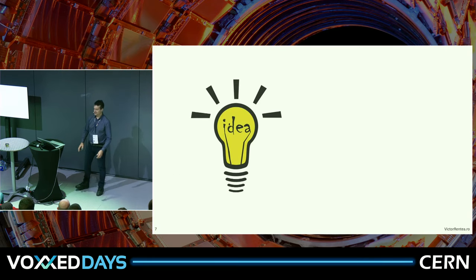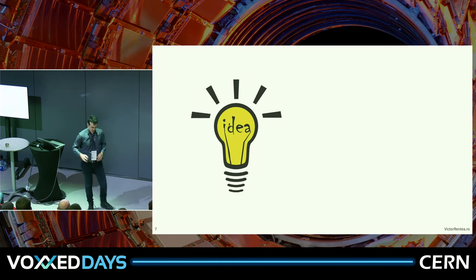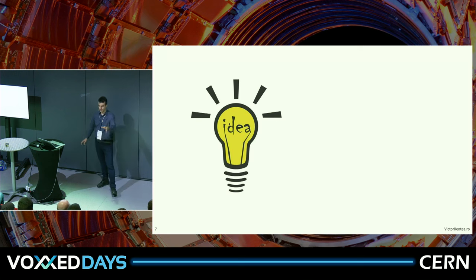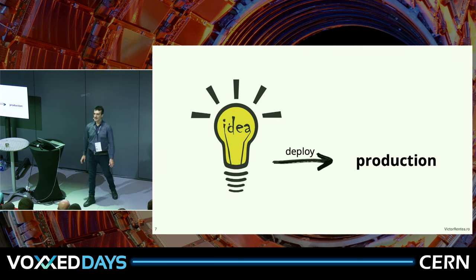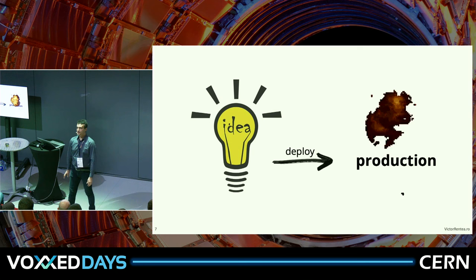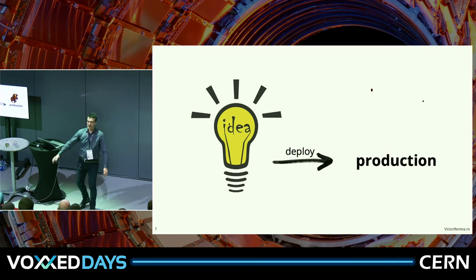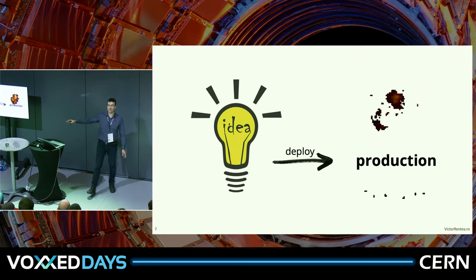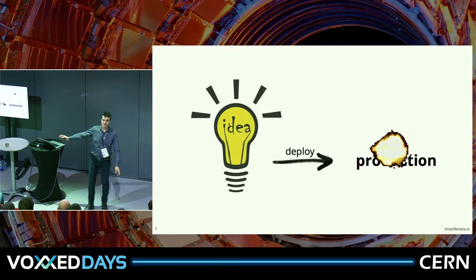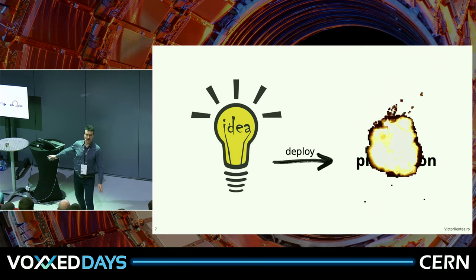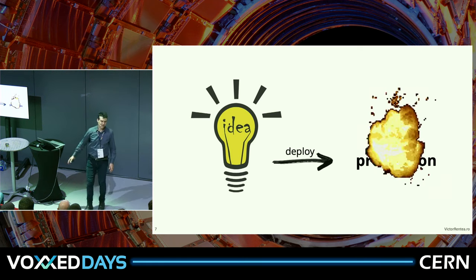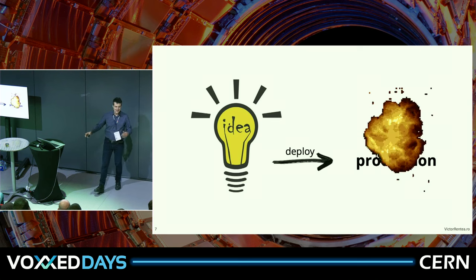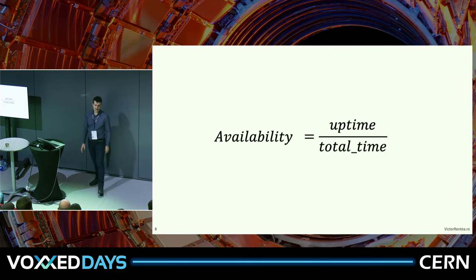You have a wonderful business idea, wonderful developers translate it into code, you put your product to production — and then boom. No matter how brilliant your idea, if you cannot withstand production, if you have 90% availability, you're dead. People are going to run away, your customers are going to be disappointed. Availability is a mandatory thing today.